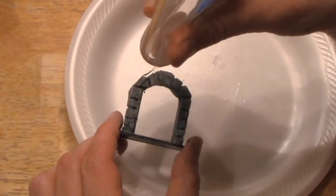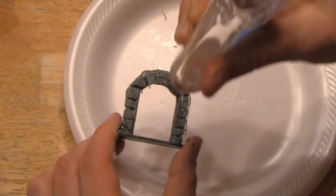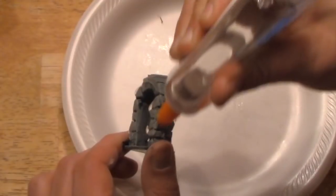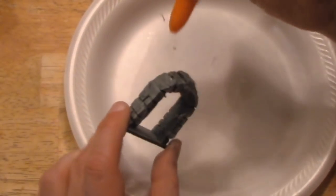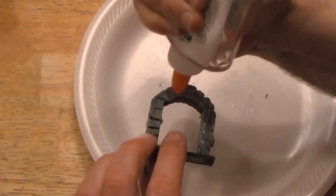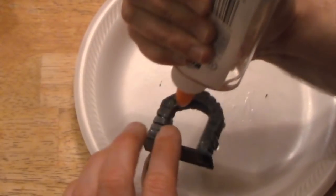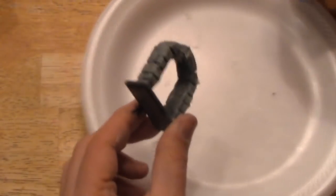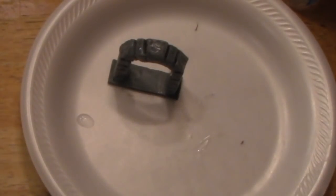I coat the terrain with a thin layer of Elmer's Clear Glue. It'll form a protective shell and prevent it from being damaged. And I set it out to dry overnight.